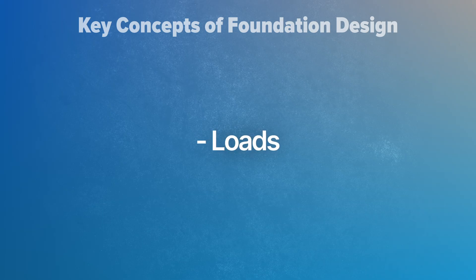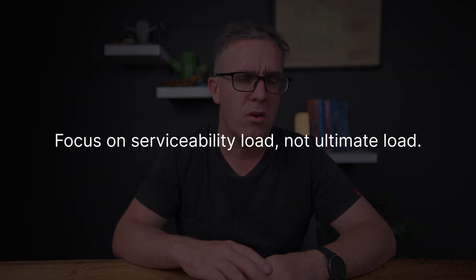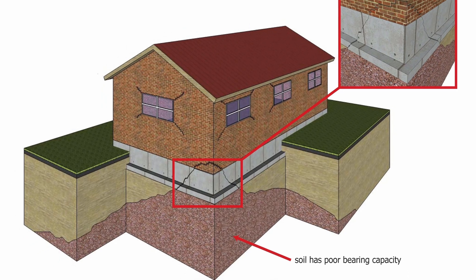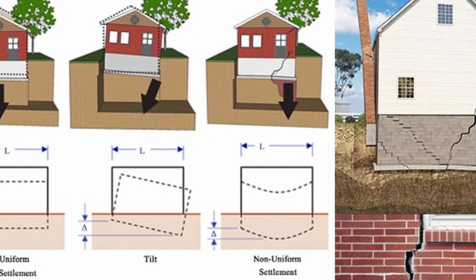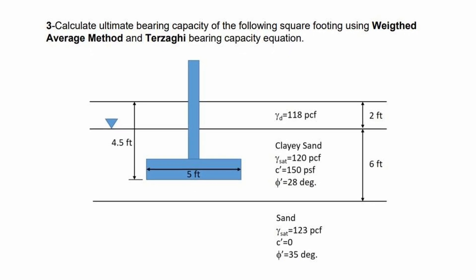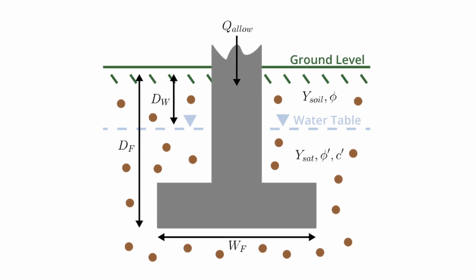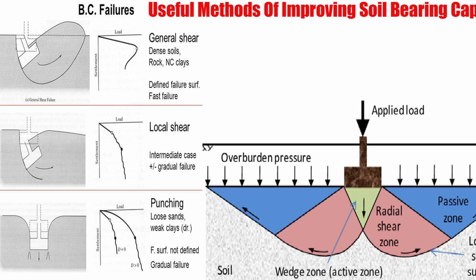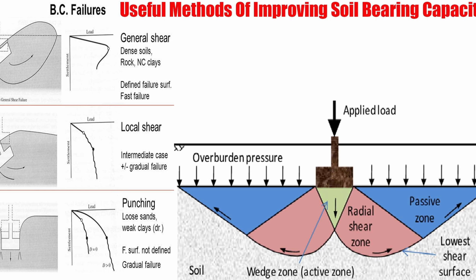Foundation design is all about what settlement you can achieve under a given load. When thinking about types of loads and movements, you're thinking about a serviceability load, not an ultimate load. Typically in foundation design you use serviceability loads — using ultimate loads would be way too conservative, as it's all about movements and settlements. However, there are cases where you do use an ultimate bearing capacity, typically for seismic events, to make sure your building doesn't fundamentally fail under a higher load. You'll have a higher allowable bearing capacity for those ultimate seismic loads, which means there will be more movement under that event — but provided the building stands up, that's acceptable.